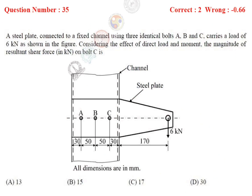This is the bolt eccentric loading case. A steel plate connected to a fixed channel using 3 identical bolts A, B, C carries a load of 6 kN as shown in the figure. Considering the effect of direct load and moment, the magnitude of resultant shear force on bolt C is how much?